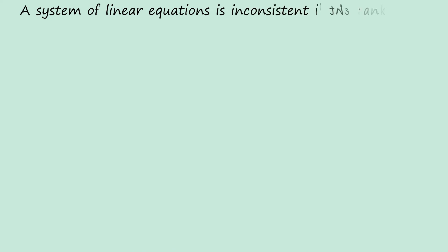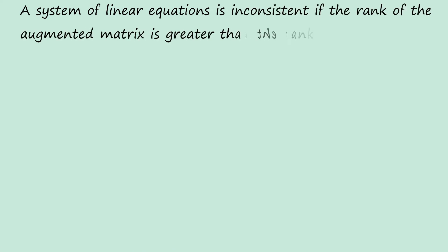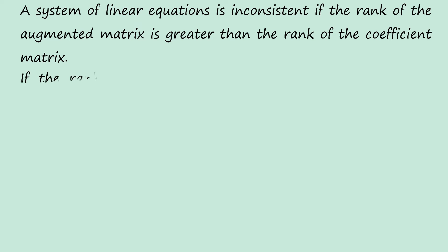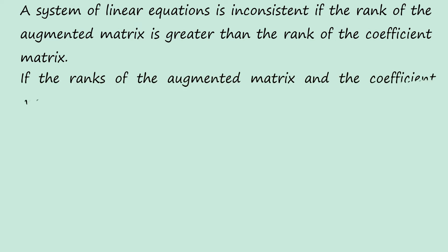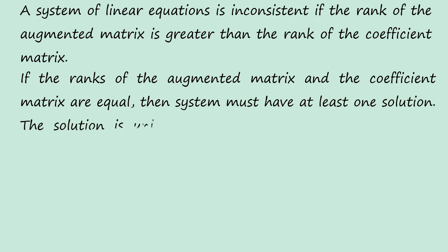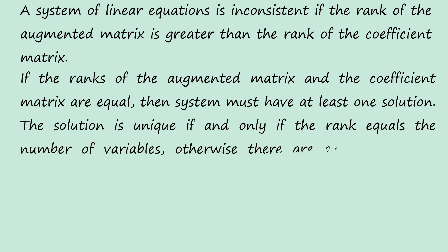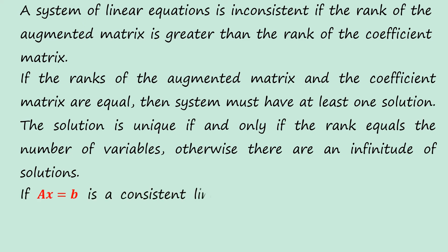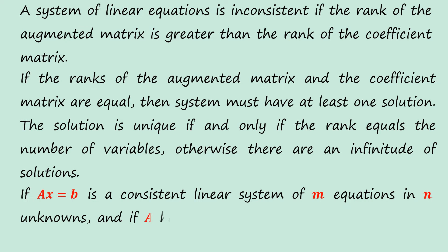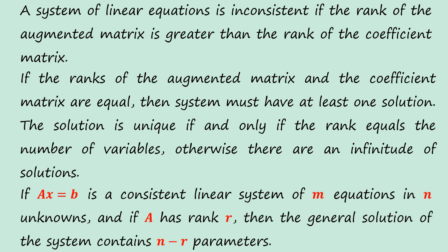A system of linear equations is inconsistent if the rank of the augmented matrix is greater than the rank of the coefficient matrix. If the ranks of the augmented matrix and the coefficient matrix are equal, the system must have at least one solution. The solution is unique if and only if the rank equals the number of variables; otherwise there are infinitely many solutions. If Ax equals B is a consistent linear system of m equations in n unknowns and A has rank r, then the general solution contains n minus r parameters.